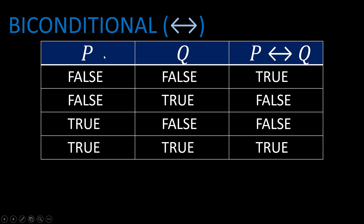The bi-conditional is interesting because both sides need to be equal. A false statement can only bi-conditionally imply a false statement to produce a true result — they both need to be the same. So false bi-conditionally implying false is true. And true bi-conditionally implying true is also true. But false and true, or true and false, cannot work — because you're trying to bi-conditionally imply that false equals true, which is not the case. So it is a false statement.